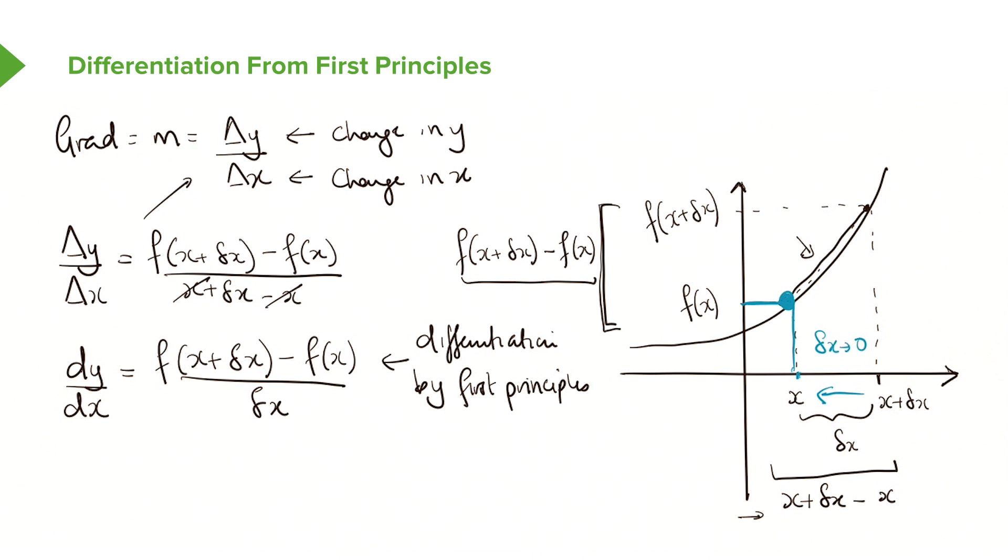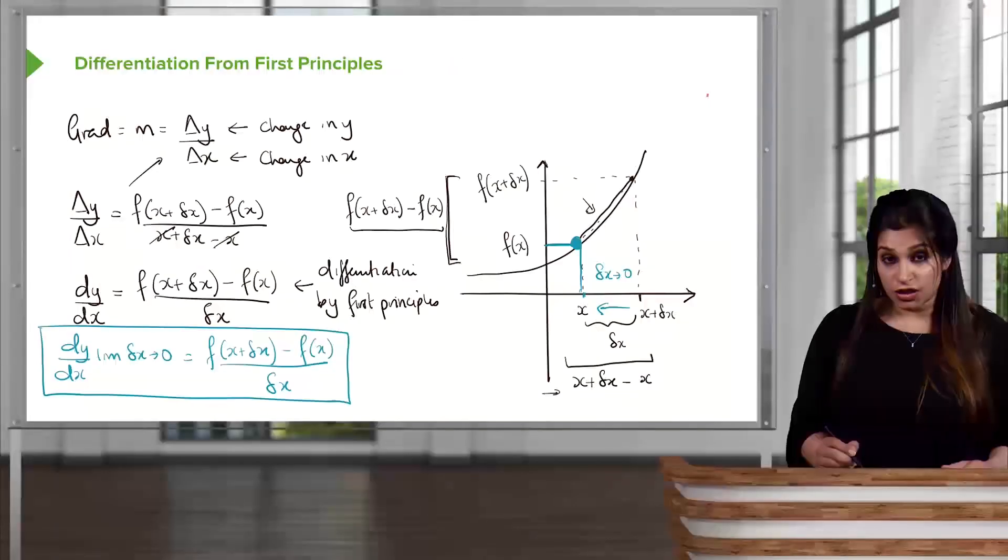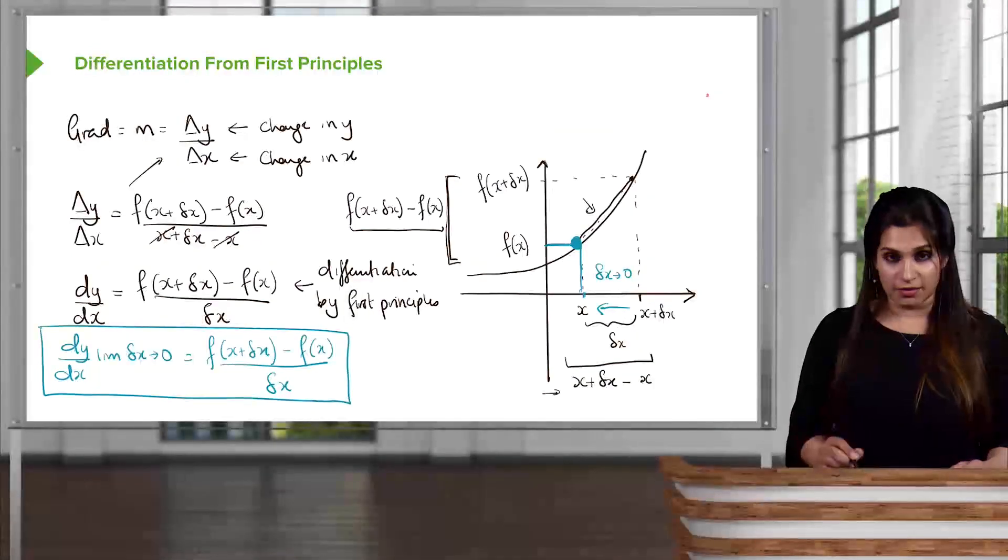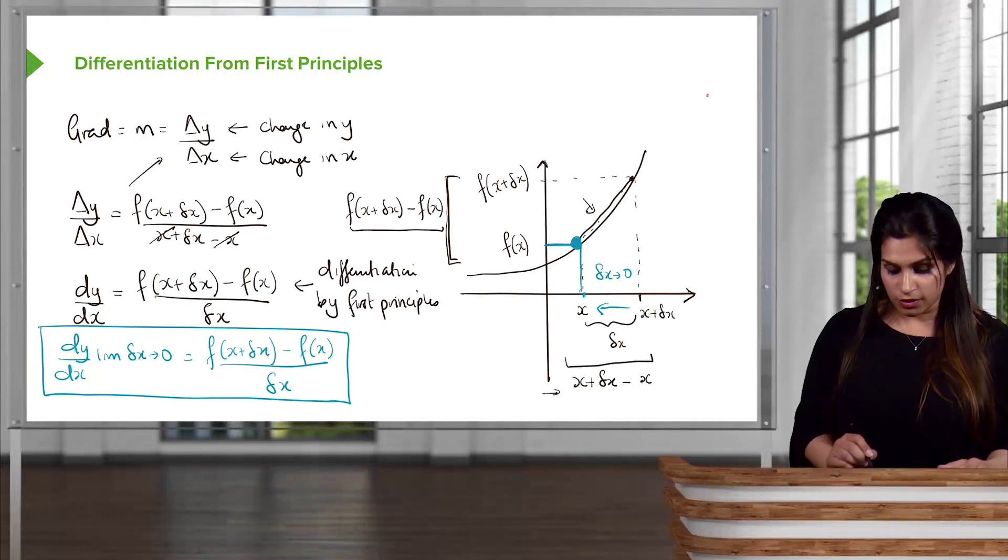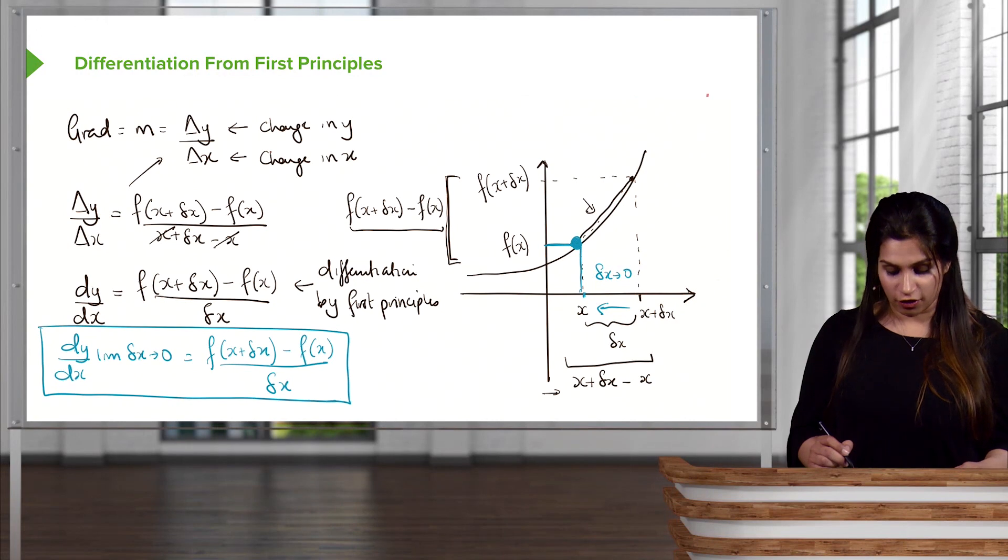So if we now apply that concept here, if we say dy by dx as the limit of delta x tends to zero is the same, so we'll now say that f of x plus delta x minus f of x over delta x. And this is your formal definition of differentiation from first principles, or like I said before, is known as the definition of a derivative. You will see that we will use this definition lots of times through this course, especially when we're faced with functions that aren't as simple to differentiate. We will always go back to the basics or to the definition of a derivative.